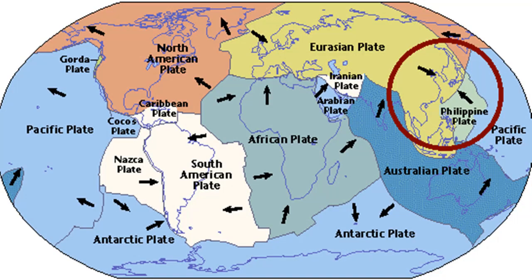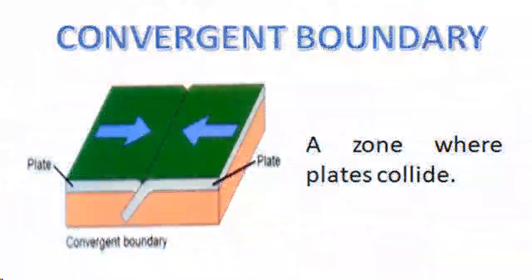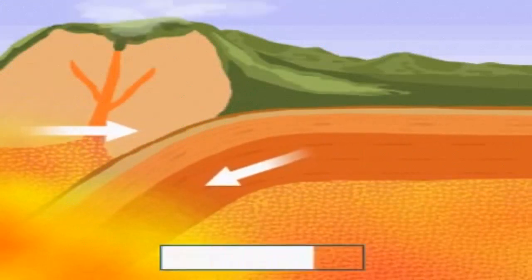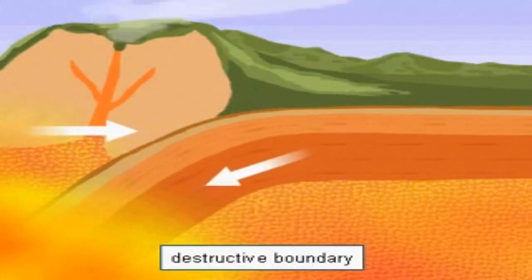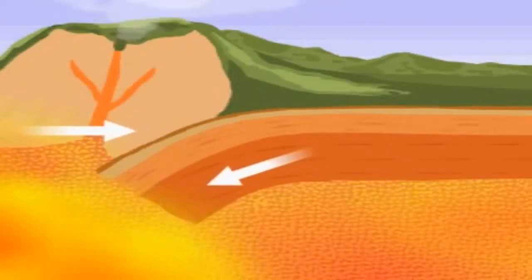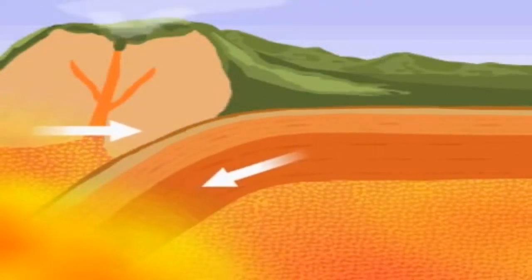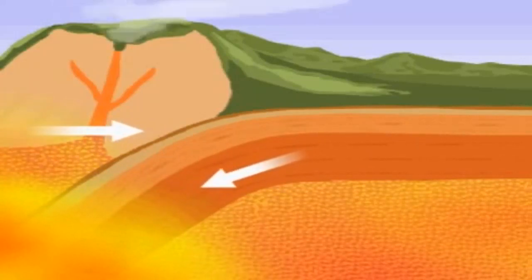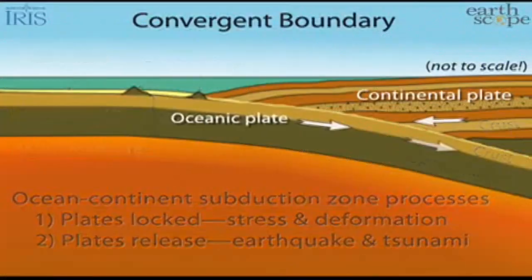Let's take the case of the Philippine plate and the Eurasian plate. You will notice that the two plates are moving toward each other — this is an example of a zone where plates collide. This second type of plate boundary is called the convergent plate boundary, also known as the destructive plate boundary. It occurs where two plates are pushing toward each other, and the crust is destroyed and recycled back into the interior of Earth while one plate dives under another.